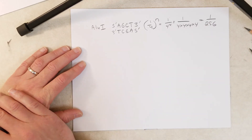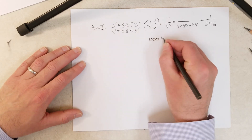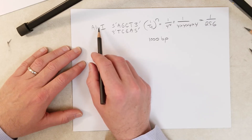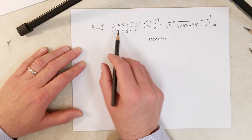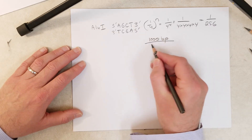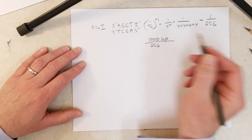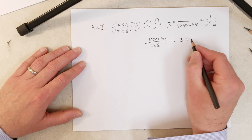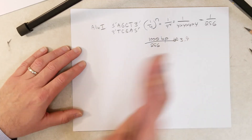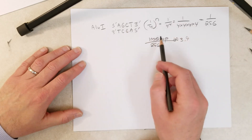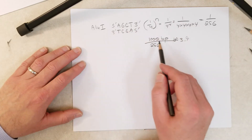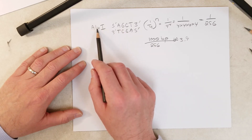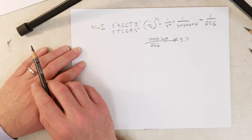So we should expect to see the ALU1 recognition sequence once every 256 base pairs. If we had a DNA molecule of 1,000 base pairs and wanted to know how many times we'd expect to see an ALU1 recognition sequence, we'd take 1,000 divided by 256, and we get approximately 3.9. It's an easy way to estimate how many times a given restriction endonuclease should cut a DNA molecule of a certain length.